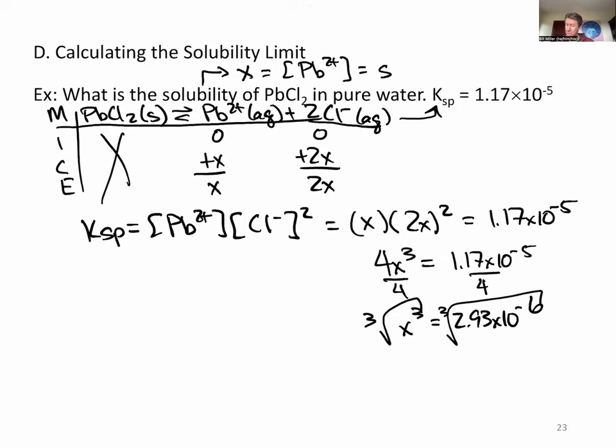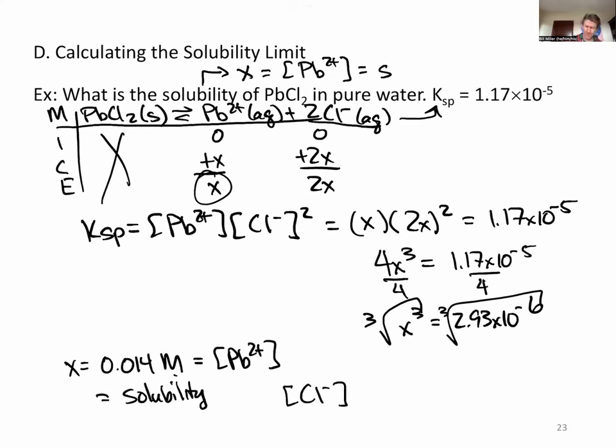And I get 0.014 molarity as my X value. And since X is my concentration of lead ion, and it is also my solubility. Now if the question was, what is the concentration of chloride ions? That's 2X. And this is a common question. So 0.028 molarity, Cl minus.